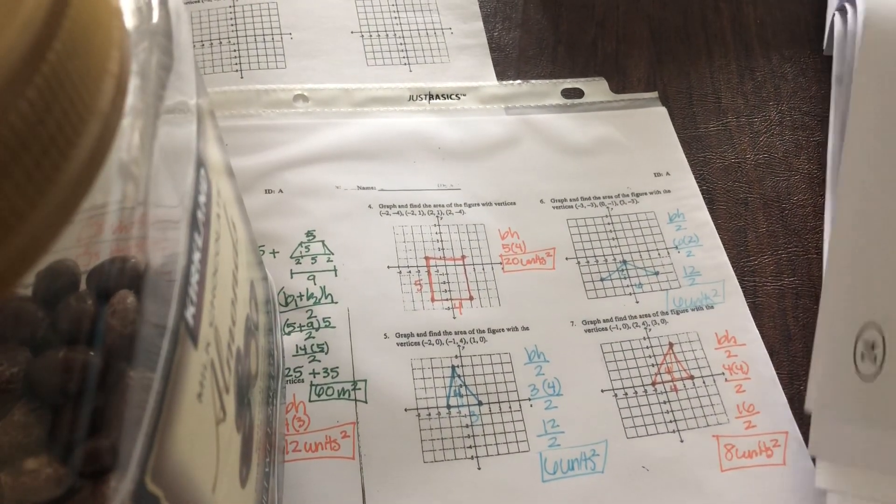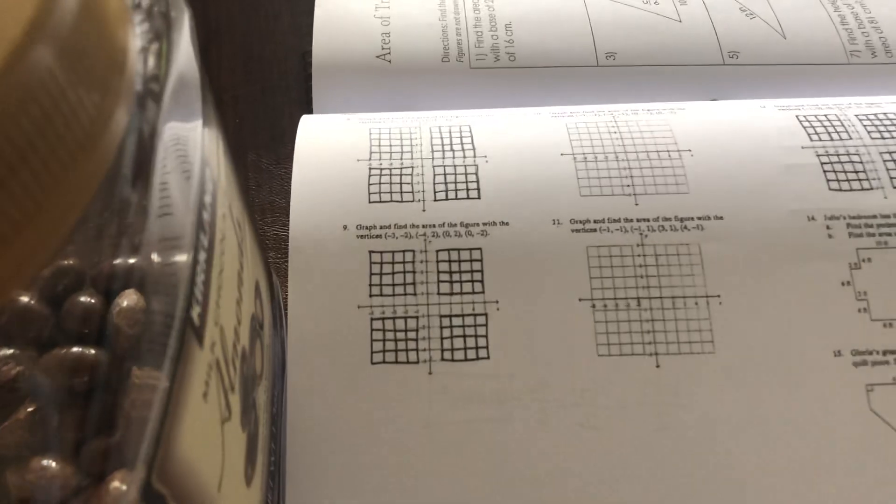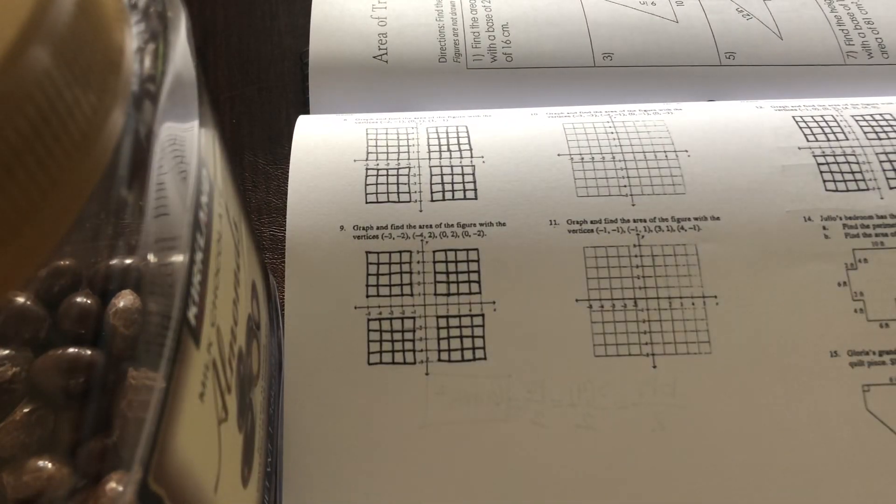Let's go ahead and take a look at page 24. So if you turn to page 24 in your packet, number eight is another triangle. So I'm going to have us take a look at number nine instead.